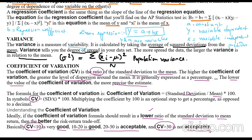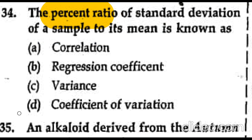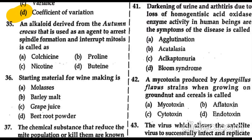Among these four options, the ratio of the standard deviation to the mean is the coefficient of variation. The answer to the question — the percent ratio of standard deviation of a sample to its mean — is the coefficient of variation.